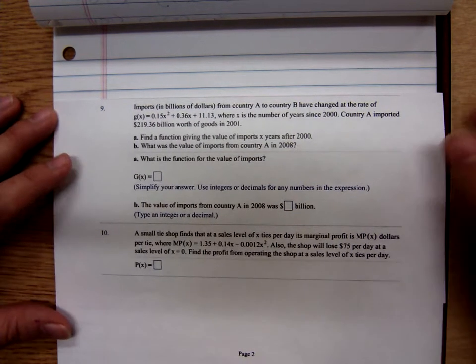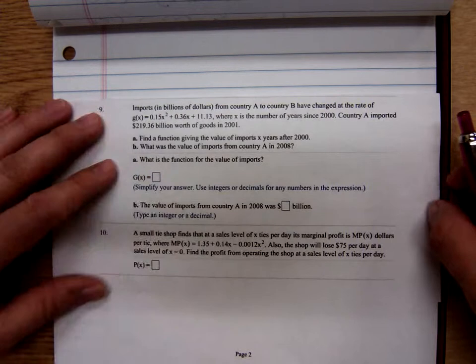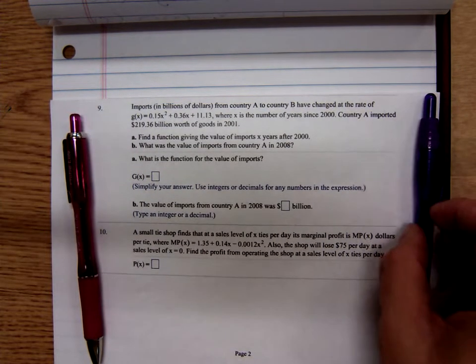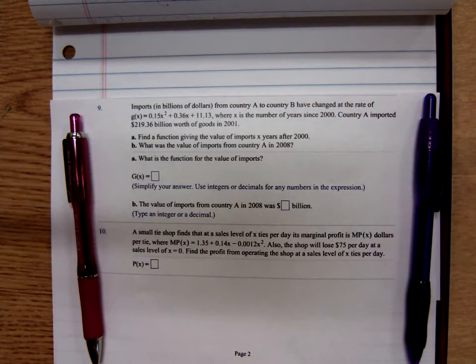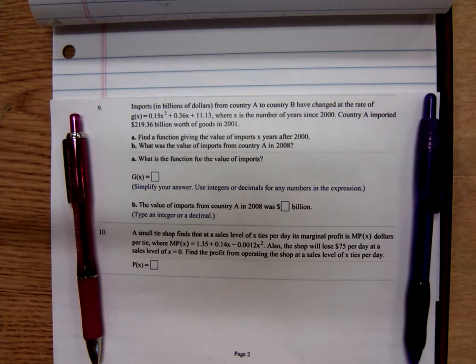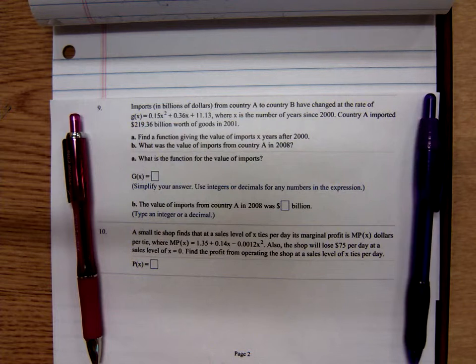Imports in billions of dollars from country A to country B have changed at the rate of G(x) equals blah blah, where x is the number of years since 2000. Country A imported $219.36 billion worth of goods in 2001.